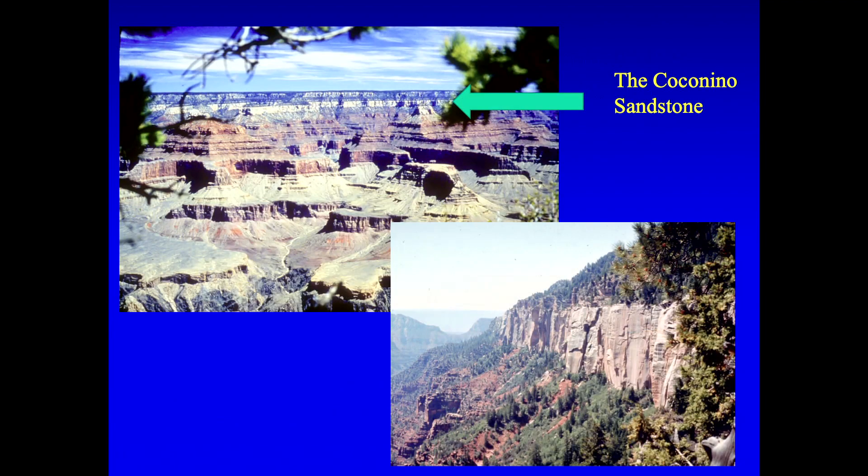So which is it? The Coconino Sandstone in the Grand Canyon. If you've ever been there, you may remember there's this white layer near the top. And here in the lower picture, there's a close-up. It's a sandstone about 100 meters thick in the Grand Canyon area.